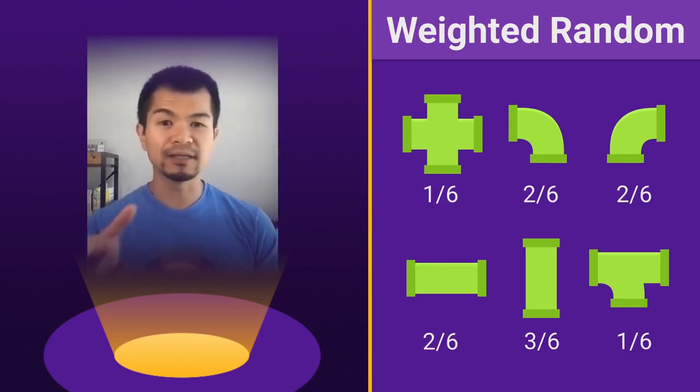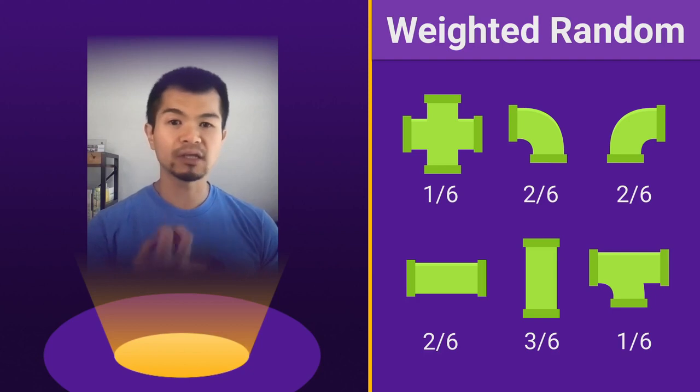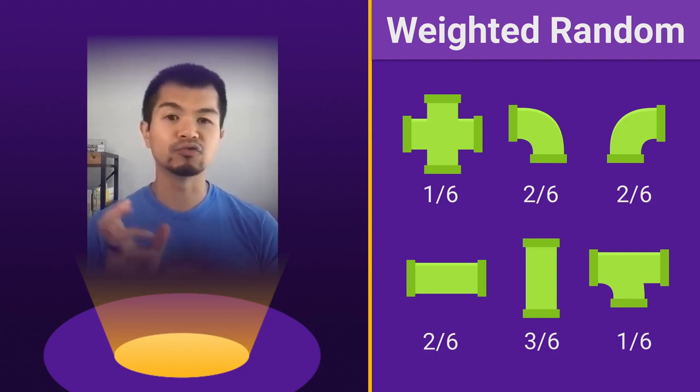So what we have here in this example, let's say the cross is now only one out of six chance. So out of six draws from this bag randomly you would get the pipe one time. And then if you look at the vertical straight pipe, that is three out of six or one half. So that means if you drew six times, three out of those six times you're likely to get the straight pipe.